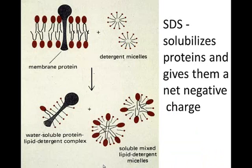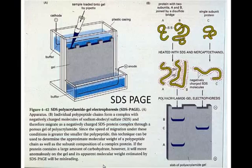SDS solubilizes protein and gives them a net negative charge. So you use these detergents, breaks down the membrane, and little SDS particles bind around the protein and makes it soluble. So now you can load the protein on the SDS-PAGE.